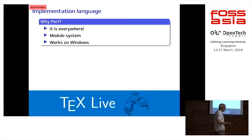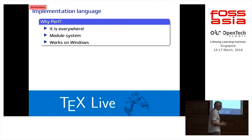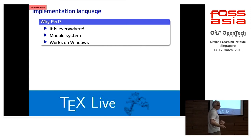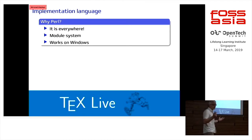Why Perl? It's everywhere, and it's really everywhere. Windows is the only exception where we have to ship a Perl, but on every other system Perl is pre-installed — you don't have to think about it. It has a decent modular system. You can write obfuscated code, of course — you can do that in every language — but you don't have to. You can write decent modularized code, and it works on Windows also nicely.